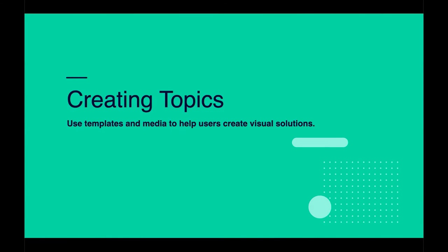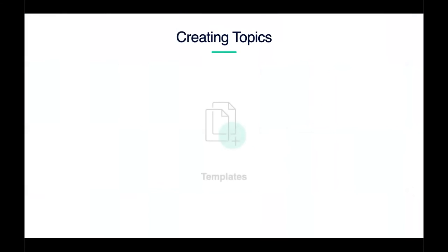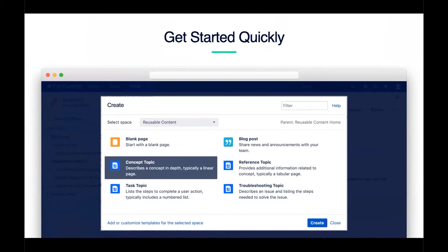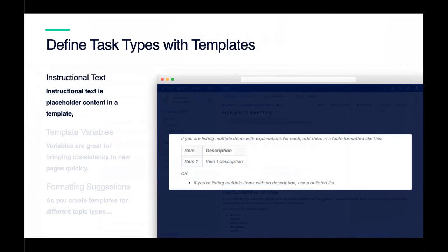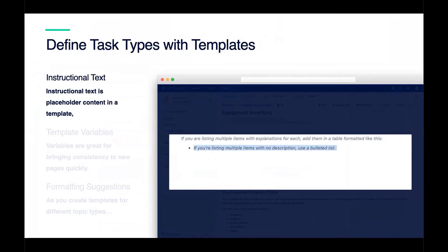In the tech writing world, a topic is a page of content structured in a certain way. Common types are concept topics — linear descriptions of what something is — reference topics, which are often tabular or bulleted lists of information, and procedure or task topics, which are numbered steps on how to accomplish something. These topic types help format and reuse content in different combinations. In Confluence, you create topics using Confluence templates, which can provide guidance to users with instructional text.